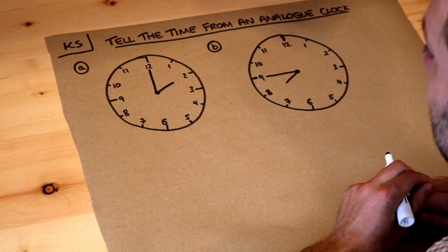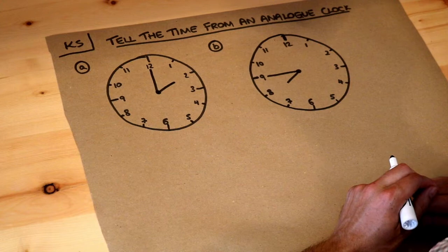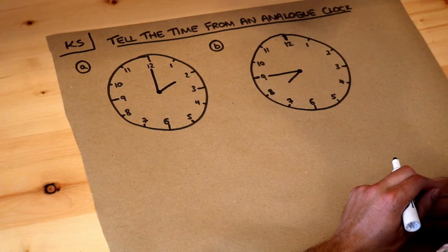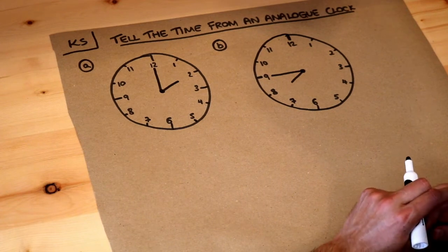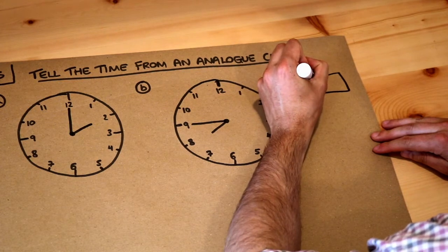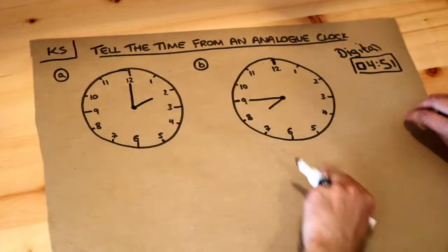Hello and welcome to this Dr. Ross Mass key skill video on telling the time from an analogue clock. The difference between an analogue clock and a digital clock is that an analogue clock has hands, whereas a digital clock just has the digits. So a digital clock might look something like this. That's a digital clock, whereas these are analogue clocks with hands.